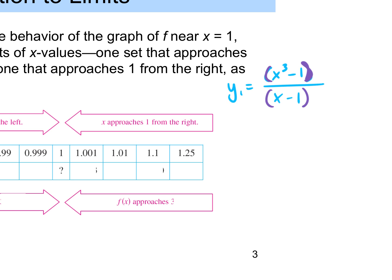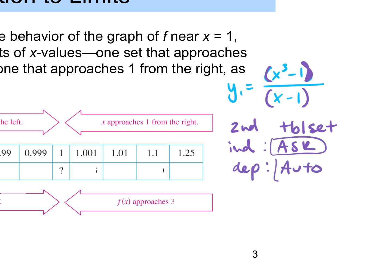In your calculator, click the Y= button and for Y1 put in our original function: (x cubed minus 1) divided by (x minus 1). Be careful with rational functions — put the top in parentheses and the bottom in parentheses. Next, click Second, TBLSET. Make sure the independent variable is set to Ask and the dependent is set to Auto. Then click Second, Table.